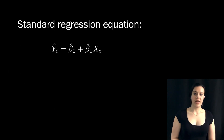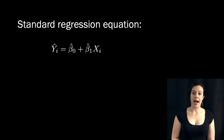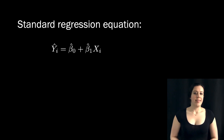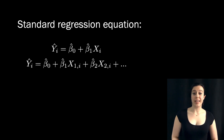Here is our standard regression equation if we just have one predictor. If we're trying to predict an outcome, y-hat, for a particular person i, we just plug the x value associated with that person into the equation. This equation is assuming there's just one predictor, but we can easily add more predictors and associated coefficient estimates, no problem.